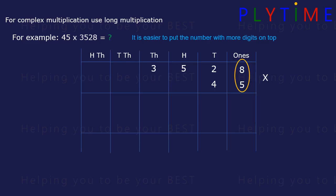5 times 8 is 40. We write the zero and carry four forwards. 5 times 2 is 10, plus the four carried forward is 14. 5 times 5 is 25, plus the one we carried forward is 26. Carry the two and write the six. And 3 times 5 is 15, plus the two carried forward is 17.